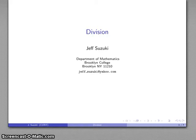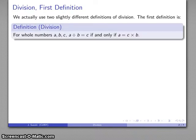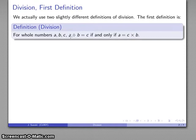Division is the last and by far the most complicated of our elementary operations. We'll start by introducing a definition. One of the things that makes division complicated is that there are actually two slightly different definitions. The first definition emerges from our definition of multiplication: if I have whole numbers a, b, and c, then a divided by b gives us the quotient c if and only if a is the product c times b. The dividend divided by the divisor is the quotient.